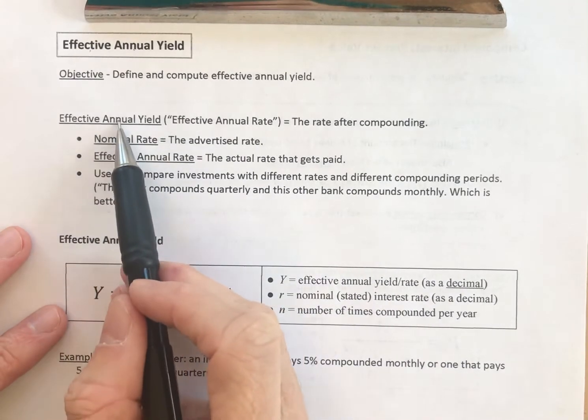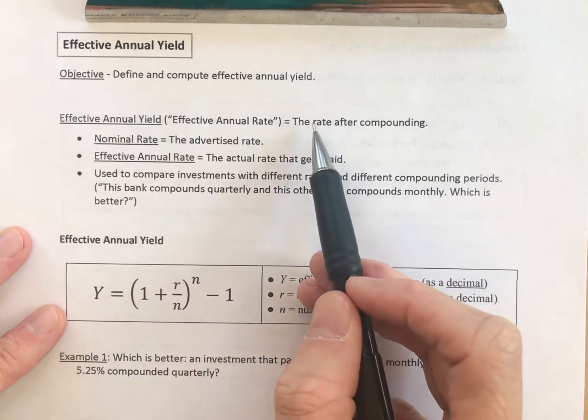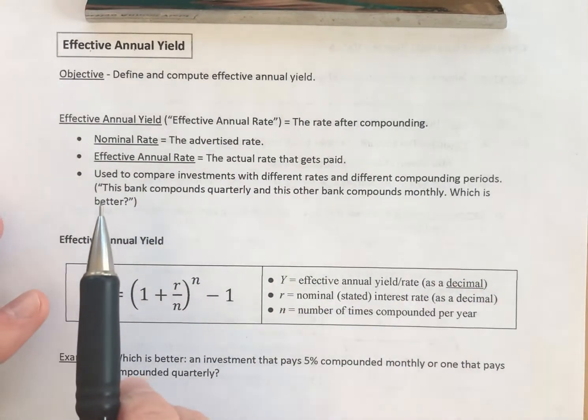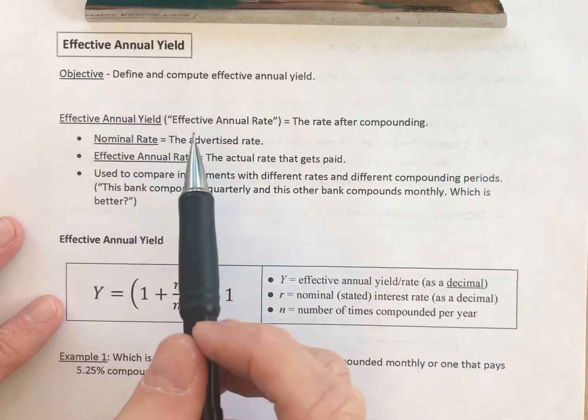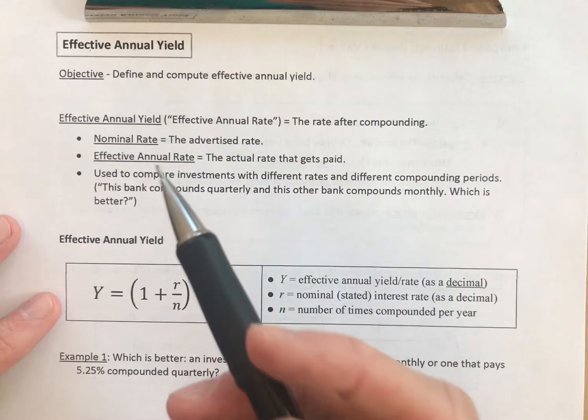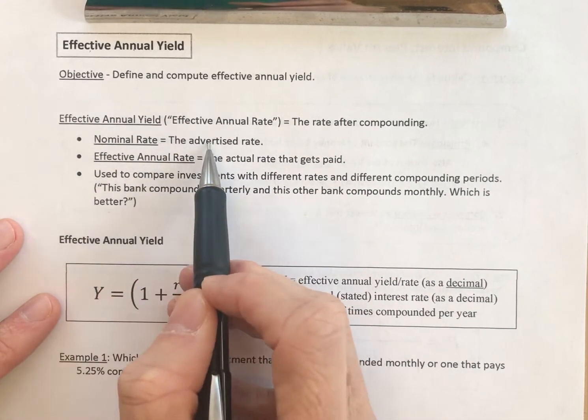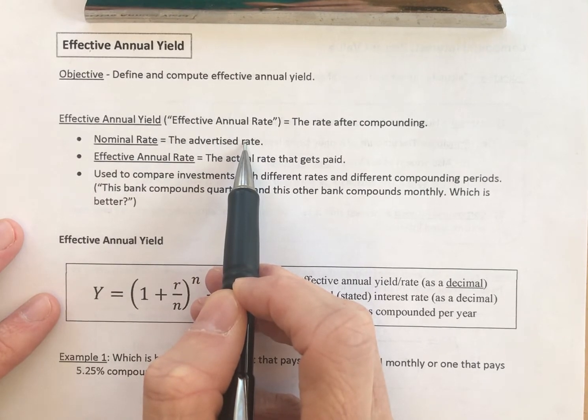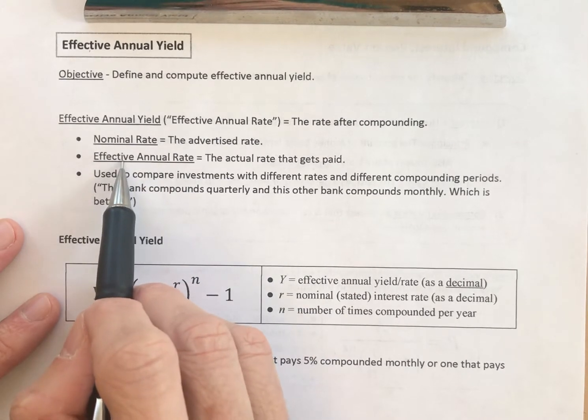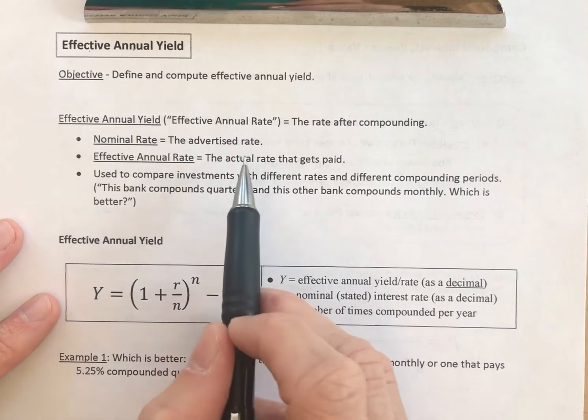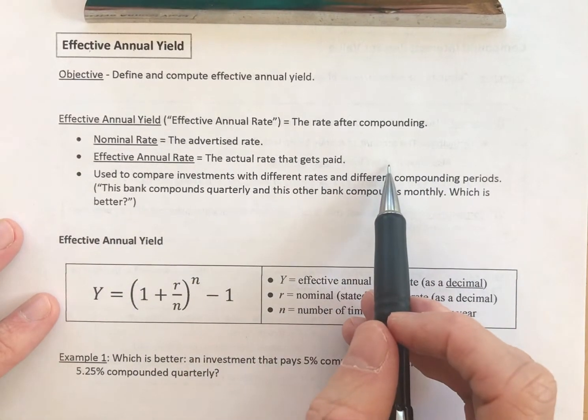The effective annual yield, also called the effective annual rate, is the rate after all the compounding has been done for the year. What you see normally advertised at banks or institutions that borrow money is the nominal rate, the advertised rate, and then they may or may not have the effective annual rate posted, which is the actual rate that gets paid after all the compounding has taken place.